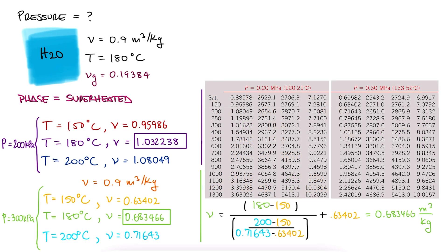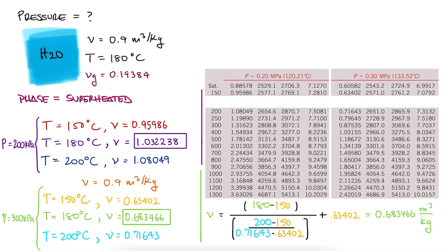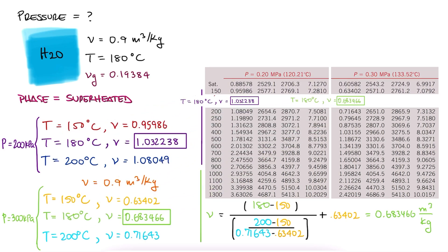With this, we've basically created the row for 180 degrees Celsius, at least for the specific volume information we need. And this confirms our specific volume is between 200 and 300 kilopascals.